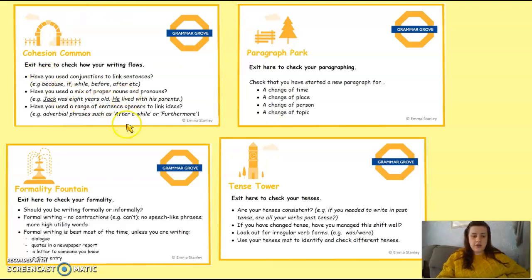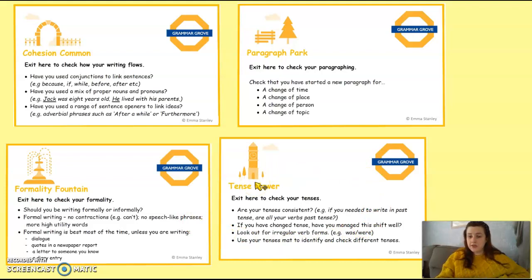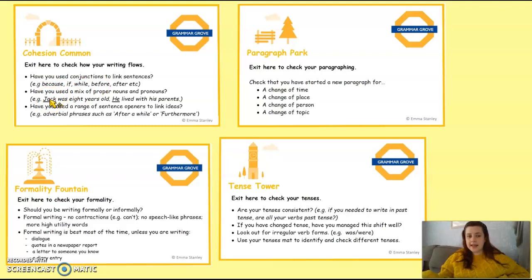Next, look at formality — scan through your writing. Is it formal enough? Are there bits that are too informal? Is your speech formal or informal? Then check your tense — make sure you're writing in the same tense all the way through, scanning through and looking for past tenses like 'was' and 'were.' Cohesion just means does it make sense — have you used conjunctions and connectives to join your sentences? Have you varied 'Stanley' with 'he'? Are there a range of sentence openers, or does it just say 'he did this, he did that, he went here'? Pause the video, scan through for these four things, and then come back when you've done that.